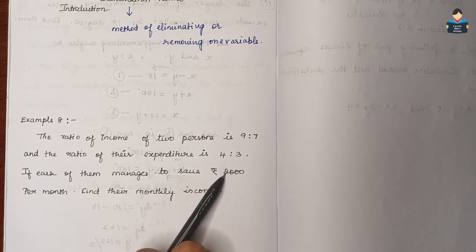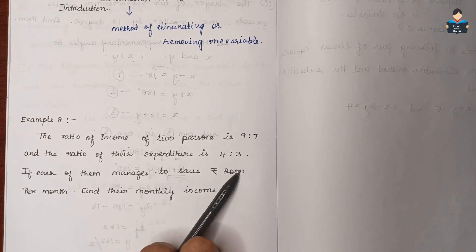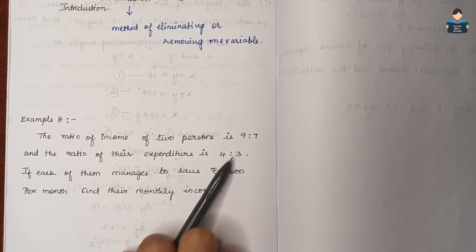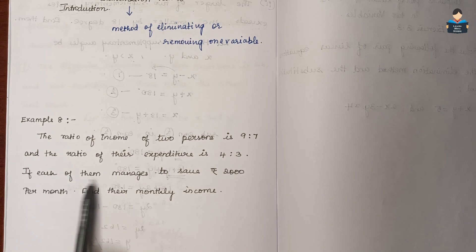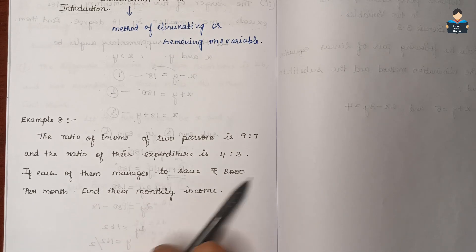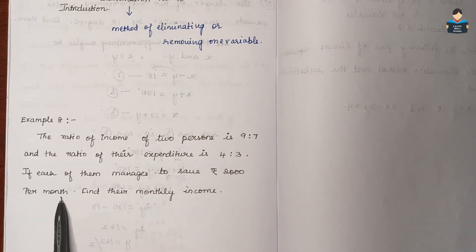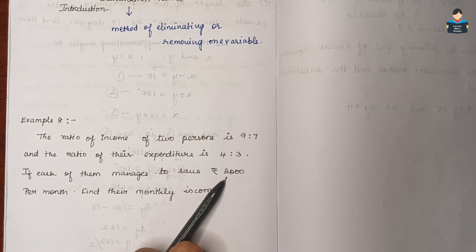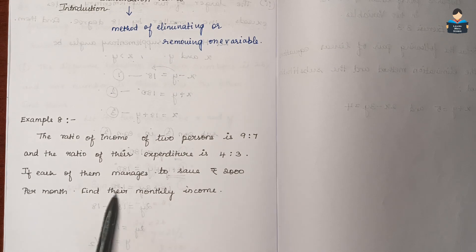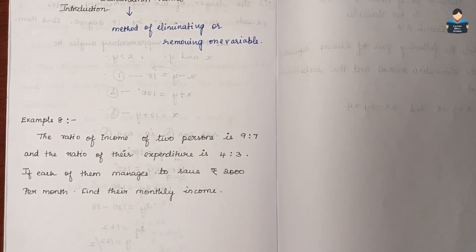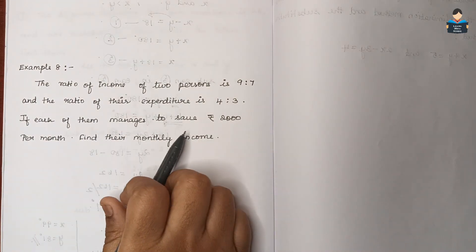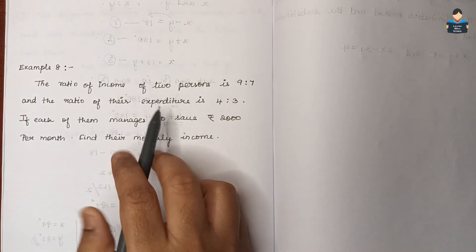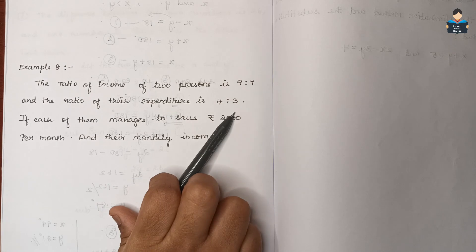Each of them manages to save 2,000 rupees per month. Find their monthly income. Let income be x and expenditure be y.